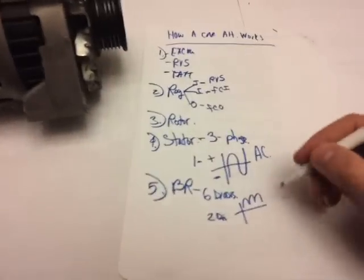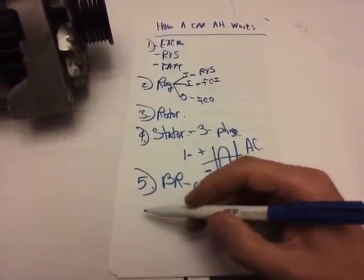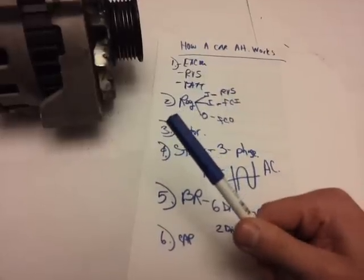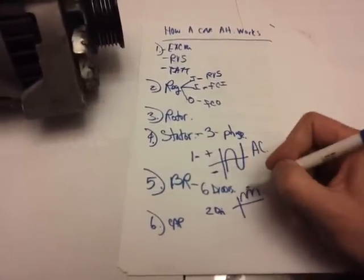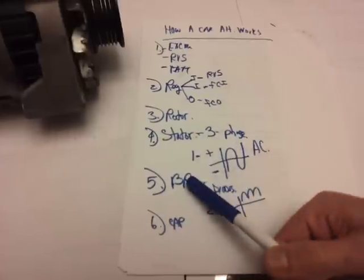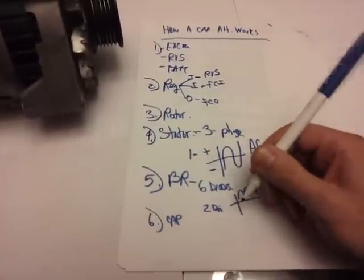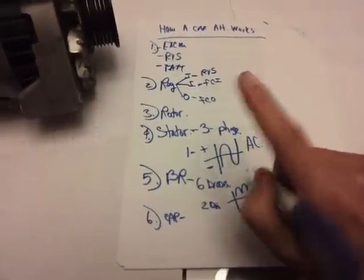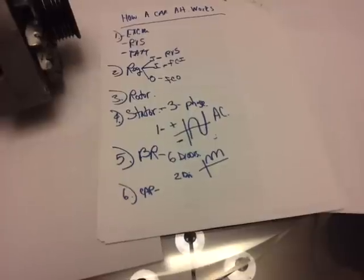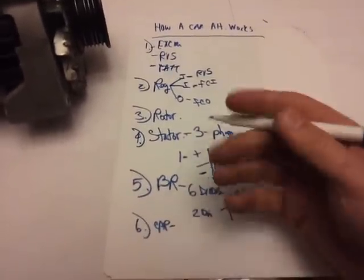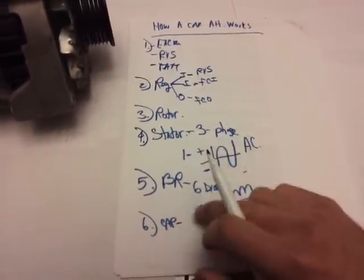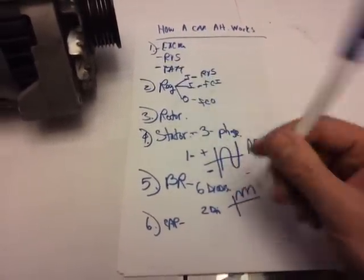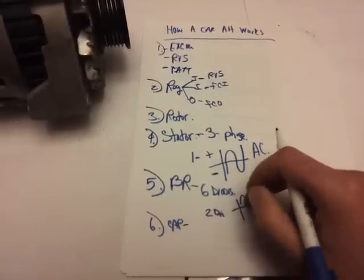Let's talk about also a capacitor. Now what a capacitor does inside this alternator—this smooths out these pulsations to protect this bridge rectifier. And also it smooths it out when it shoots out the electricity out of this battery terminal.